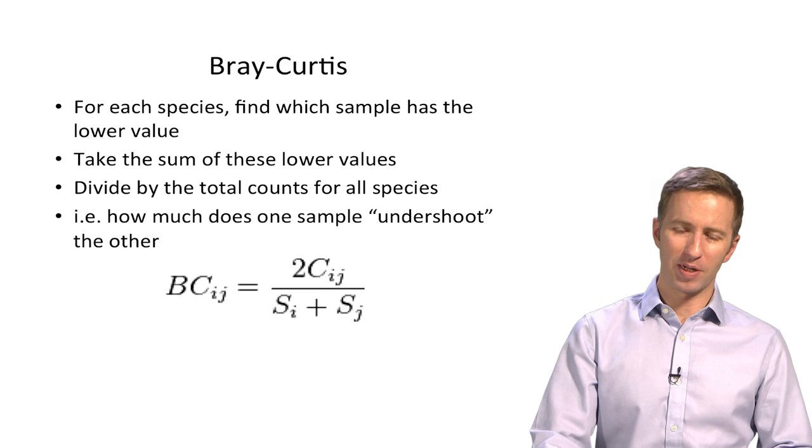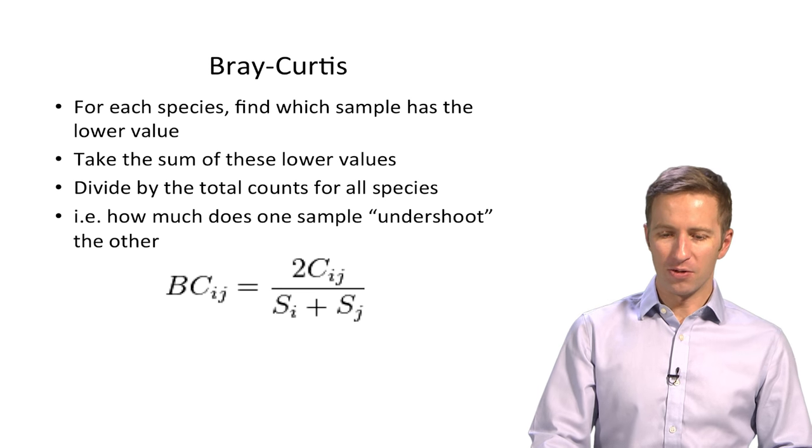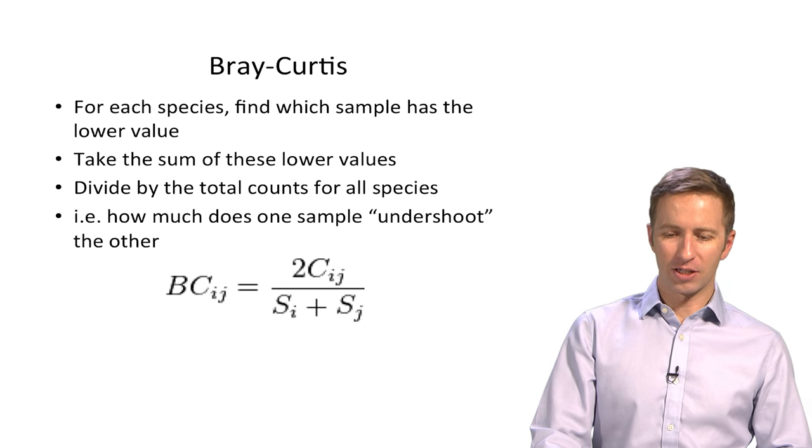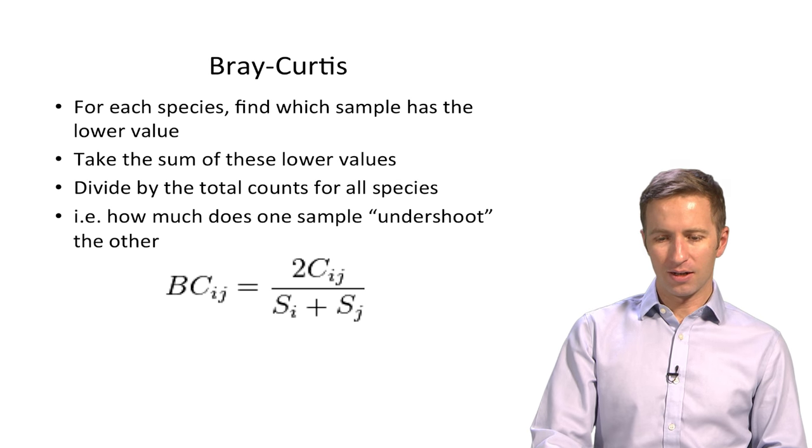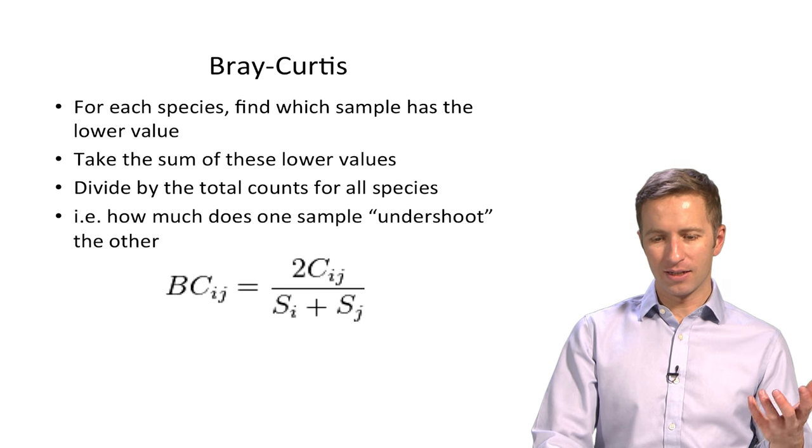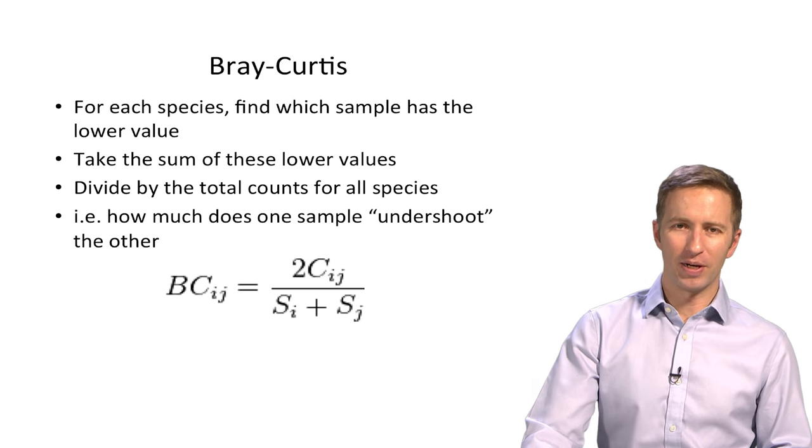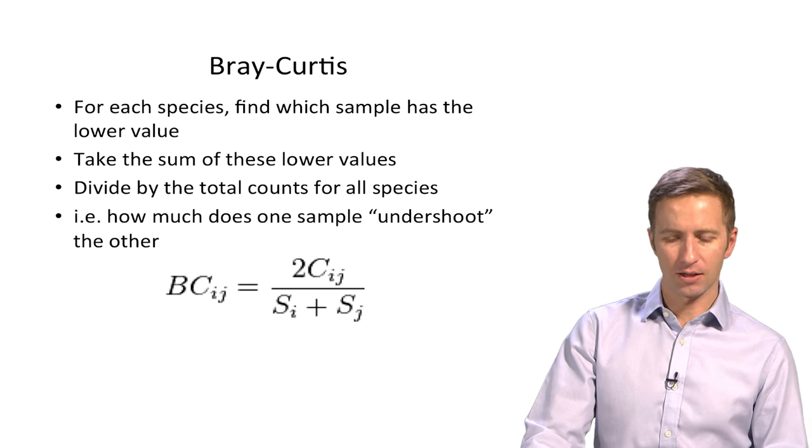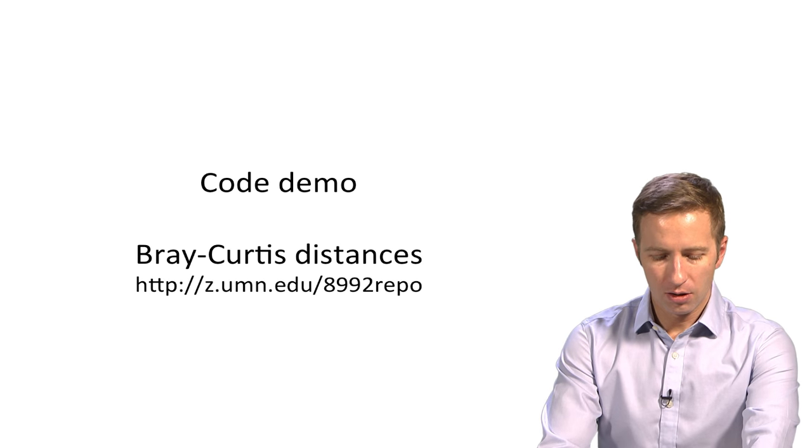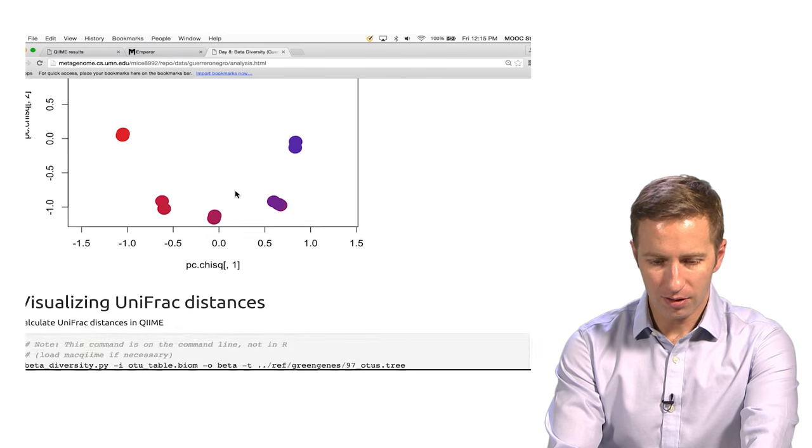And Bray-Curtis is a nice ecological distance with a lot of history in macroecology. It tends to work very well in the microbiome too. You can try lots of other ecological distances, Morisita-Horn, Manhattan distance. There are many, Hellinger, but they often give you basically the same results. So let's look at the code for Bray-Curtis. That's actually up here.